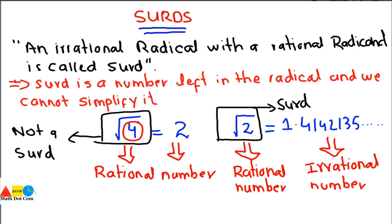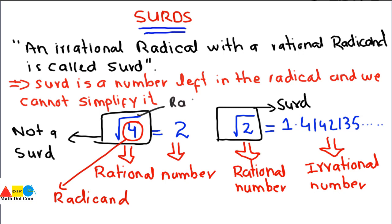You can solve square root of 4 — it equals 2. You can solve square root of 16 — that equals 4. But you cannot simplify square root of 2, square root of 3, square root of 5, and so on. If you try, you get a number that goes on forever. This is the difference between a surd and a number that is not a surd. Keep in mind: the number under the radical sign is called the radicand, and the square root sign is called the radical sign.